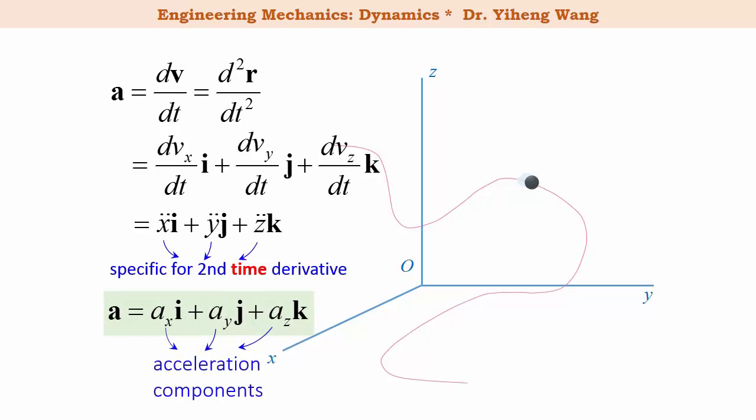It can also be written in Cartesian vector form as axi plus ayj plus azk, where ax, ay, az are the acceleration along the x, y, z directions respectively. These are known as acceleration components. Unlike the velocity vector, acceleration in general is not tangent or perpendicular to the curved path. We will talk more about that in later sections.